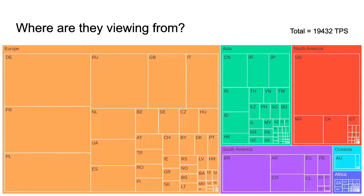To look at where users are viewing the standard map layer from, we can use country data with what's called a tree map. The area of each box is proportional to the tiles per second, and they're grouped by region. This lets us view data in a hierarchy and see both the totals for a region and individual countries. Per-country usage is what you'd expect looking at other OSM metrics — Germany, the US, France, Poland, and Russia are the top five countries.